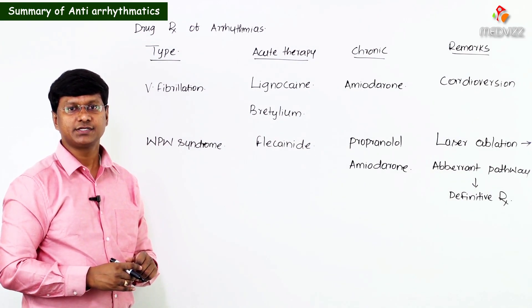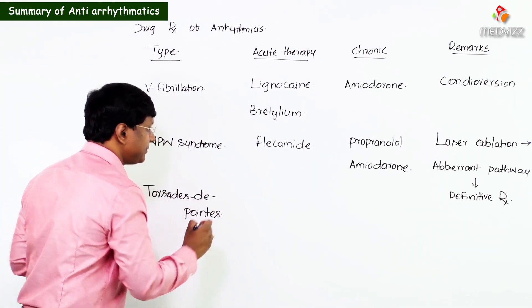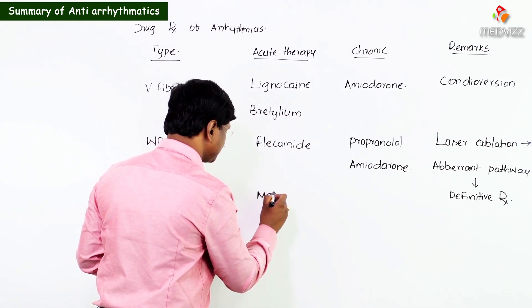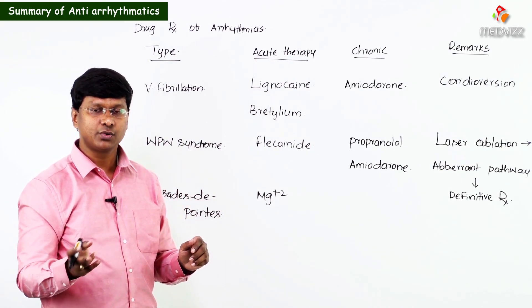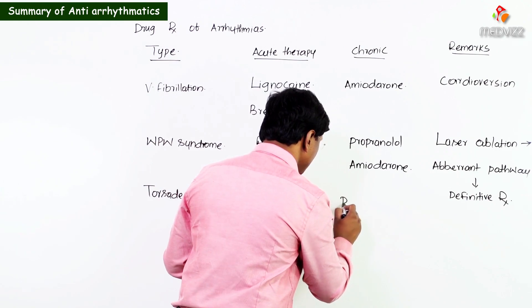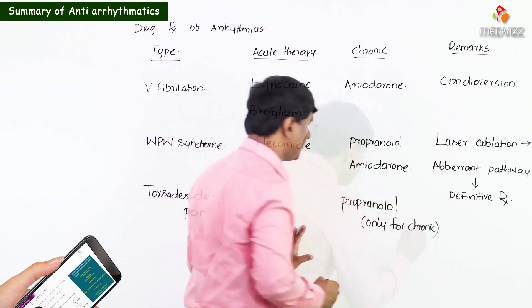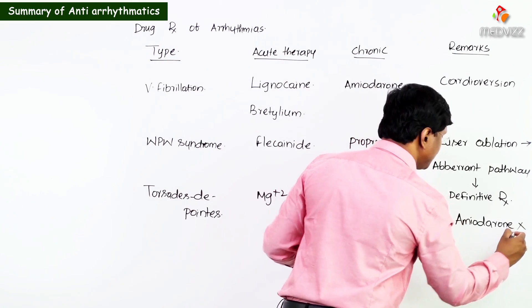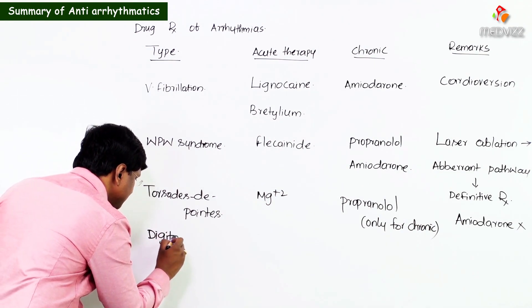In torsades de pointes, the drug of choice for acute therapy is magnesium — for both congenital and acquired long QT syndrome. For chronic therapy, we give propranolol. Remember, amiodarone should NOT be used in torsades de pointes.